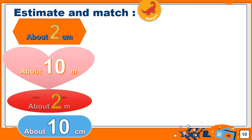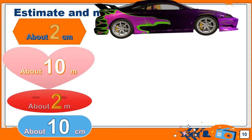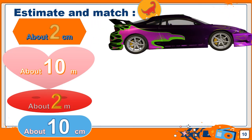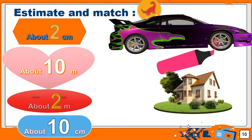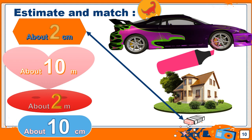This big car — of course it is meters. This pink marker — of course it is centimeters. This large house — it will be meters. This tiny eraser — of course it will be centimeters. The eraser is small, so we match it to 2 centimeters. You are making estimates — remember that!